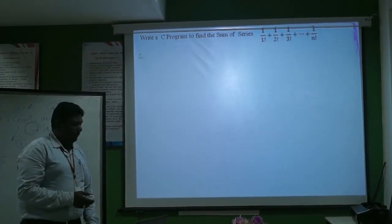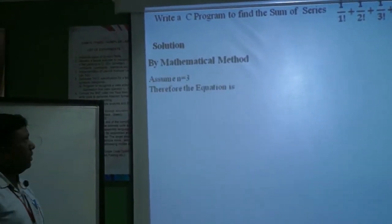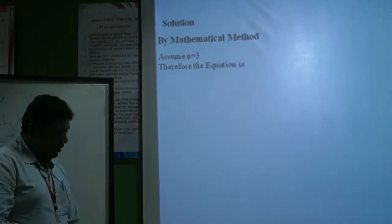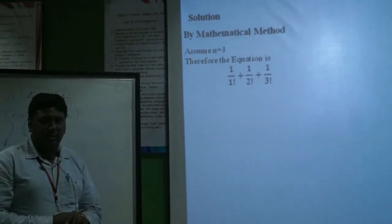First let me solve this method mathematically. Let us assume that my n is equal to 3, therefore we need to find the answer for 1 by 1 factorial plus 1 by 2 factorial plus 1 by 3 factorial.